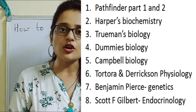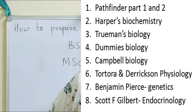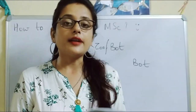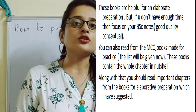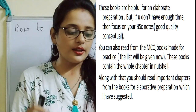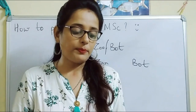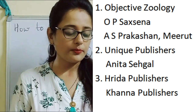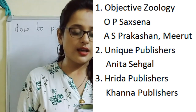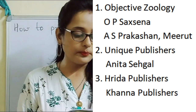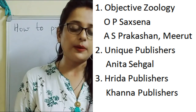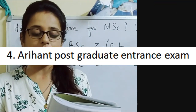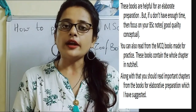The list of books for reading includes: Pathfinder Part 1 and Part 2, Harper Biochemistry, Campbell Biology, and Dummies Biology. For practice, you can use: Objective Geology by O.P. Saksena from Prakashian, Merit by Unique Publishers by Anita Sehgal — this book is really good — then the Hrida series from Khanna Publishers, and the Arihant Post Graduate Entrance Exam series.